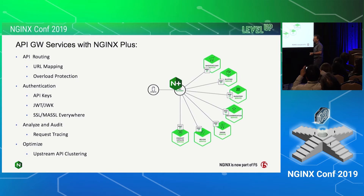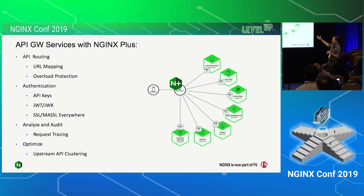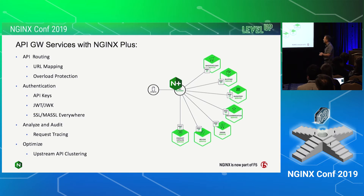There are a couple of different ways you can deploy API gateway services with Nginx — Kevin Jones just did a great presentation next door on a few of those models. But in all of them, the API gateway functionality provides the same core feature set: API routing, URL mapping, authentication, everything you'd expect. A traditional deployment puts some form of API gateway as the front door ingress service. I was working with a customer a few weeks ago that has about 650 million API calls per month.